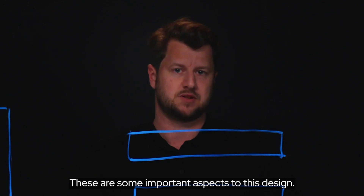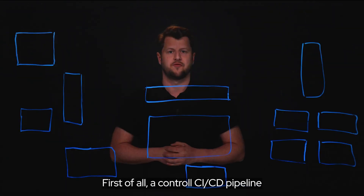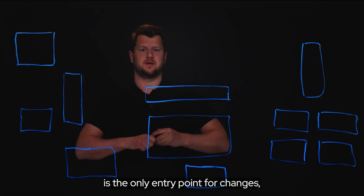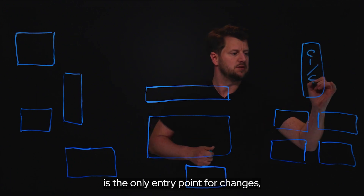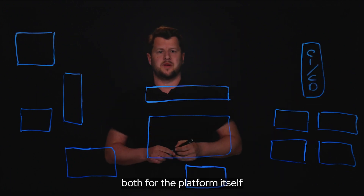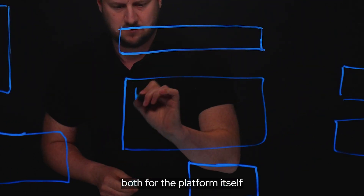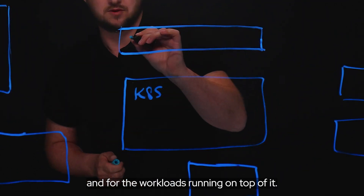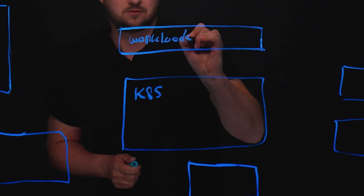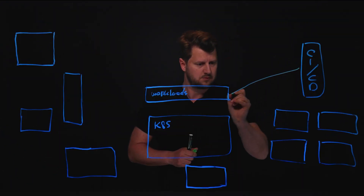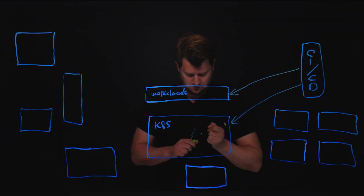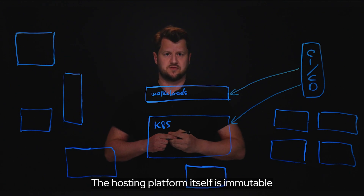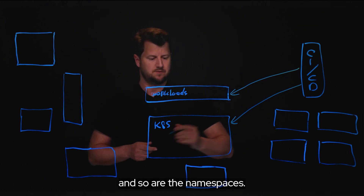There are some important aspects to this design. First of all, a controlled pipeline is the only entry point for changes, both for the platform itself and for the workloads running on top of it. The hosting platform itself is immutable and so are the namespaces.